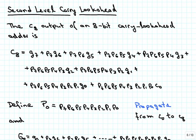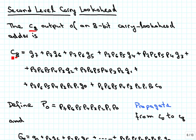Instead of rippling the carry through between those adder blocks, we can create outputs in each of those carry lookahead adders that can then be combined in a separate carry lookahead circuit for making a second level of carry lookahead. To develop that, we take a look at the output C8 from the rightmost, or least significant, block of those 8-bit carry lookahead adders.